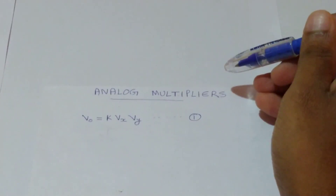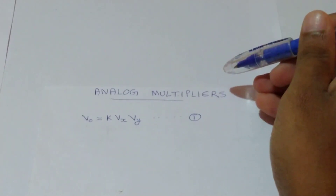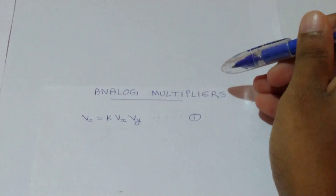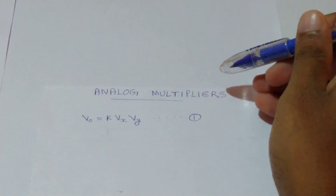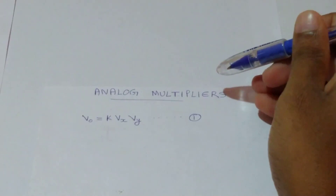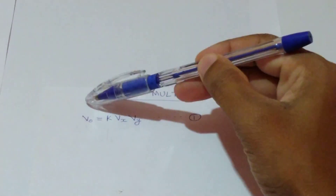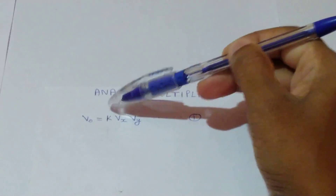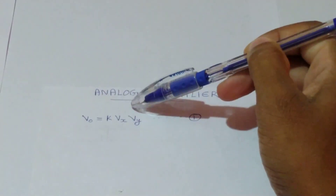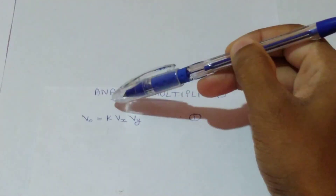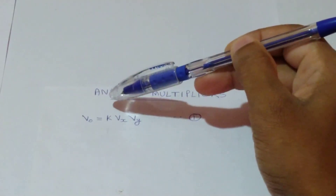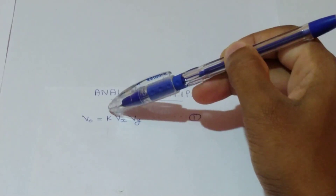Today we are going to discuss about analog multipliers. An analog multiplier produces an output voltage Vout which is proportional to the product of two inputs Vx and Vy. That is Vout is equal to K into Vx·Vy, where K is the scaling factor or the proportionality constant.